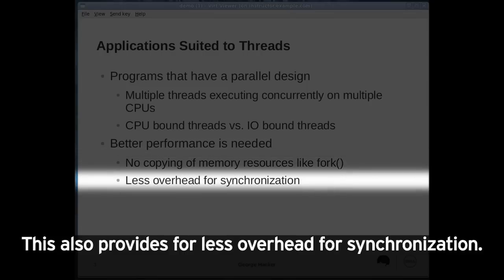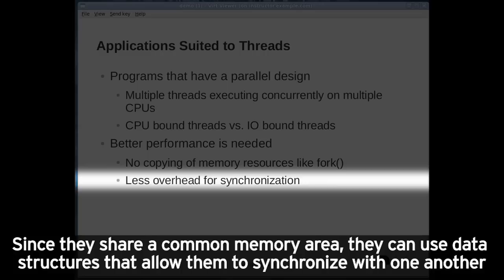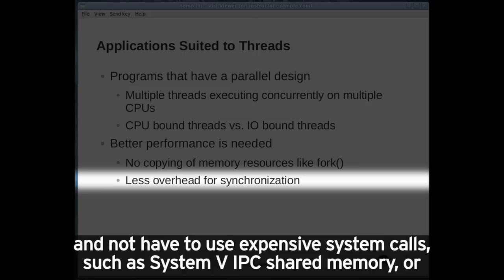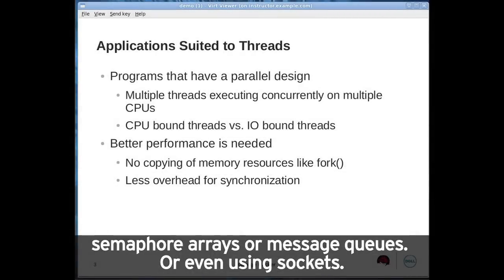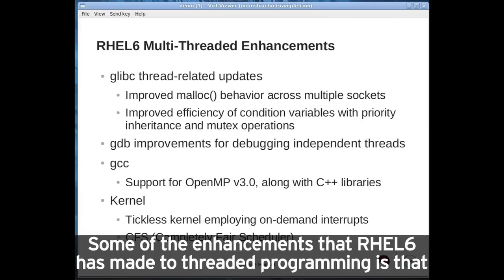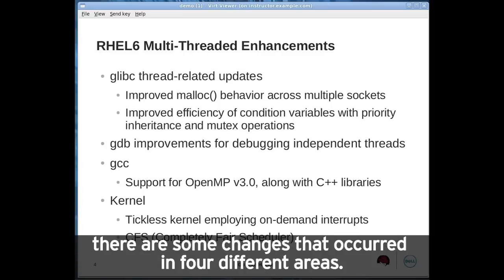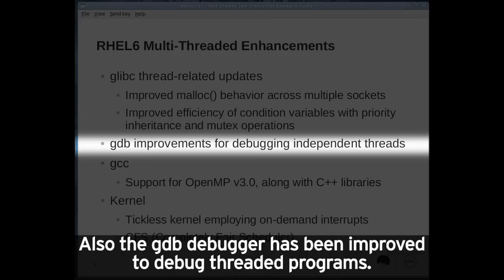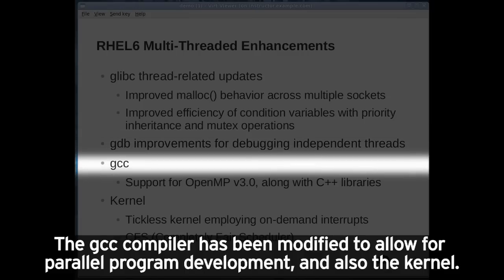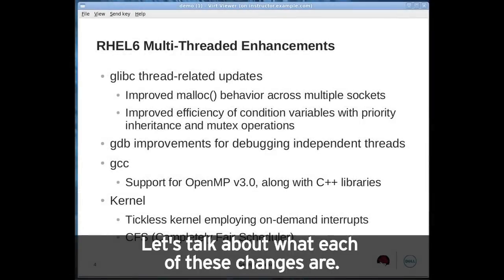This also provides for less overhead for synchronization. Since threads share a common memory area, they can use data structures to synchronize with one another without having to use expensive system calls such as System 5 IPC shared memory, semaphore arrays, message queues, or sockets. RHEL 6 has made enhancements to threaded programming in four different areas: the glibc C library, the GDB debugger, the GCC compiler, and the kernel.